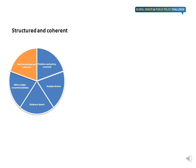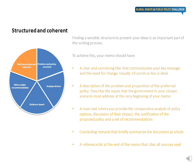Make sure you have a well-structured and coherent memo. Finding a sensible structure to present your ideas is an important part of the writing process. You need to guide your target audience through the paper by making sure all sections and arguments are well-structured, logically developed, and focused on the topic. To achieve this, your memo should have: a clear and convincing title that communicates your key message and the need for change — usually ten words or less is ideal; a description of the problem and proposition of the preferred policy; a main text where you provide a comparative analysis of policy options, a discussion of their impact, and a justification of the proposed policy; concluding remarks that briefly summarize the document as a whole; and finally, a reference list at the end of the memo that cites all sources used.